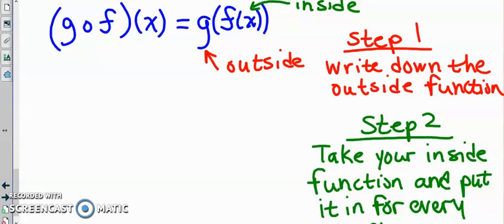So here our outside function is g of x, which is 5x minus 6. So that's our g of x function.